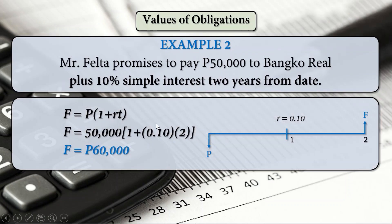For our second example, using simple interest of 10% for two years and the formula for F: P is 50,000, R is 0.10, and T is 2. So F is equal to 60,000. On the cash flow diagram, P will grow to 60,000 in the future after two years using a simple interest rate of 0.10.